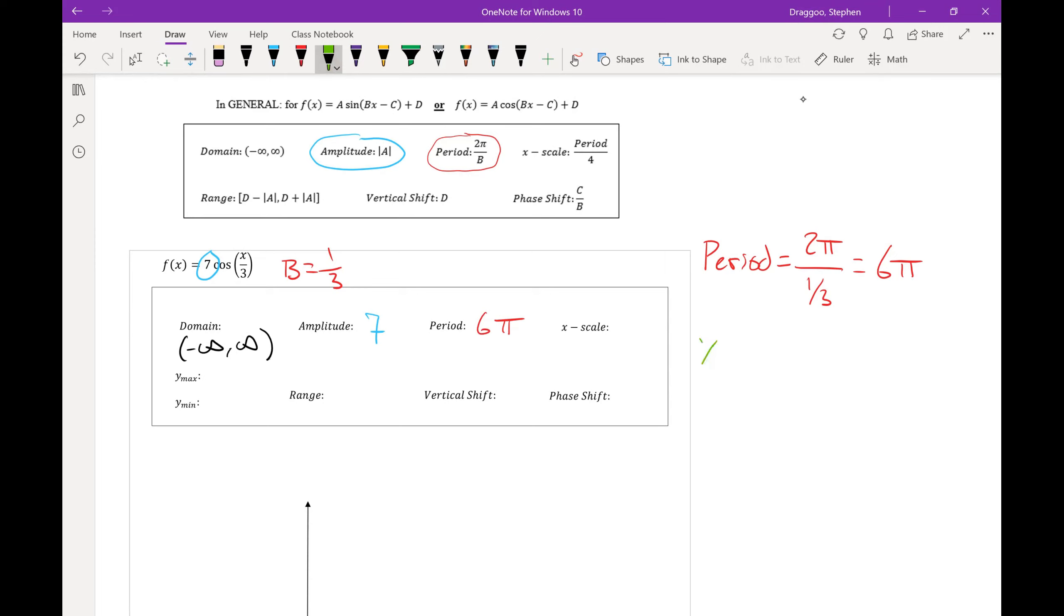Next, that x scale, well, I know it's period over four, so 6π divided by four is 3π over 2.